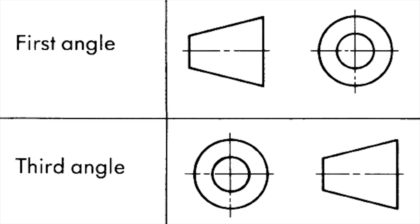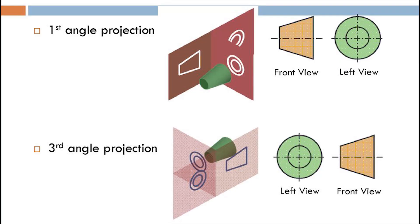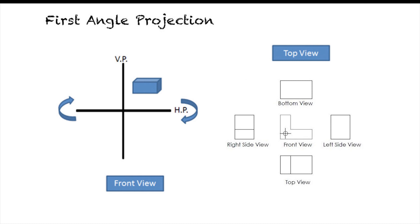In this video we are going to see first angle and third angle projection. These are orthographic projection systems. First angle projection is more popular in European countries, whereas third angle projection is more popular in North America and Asian countries.